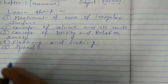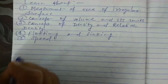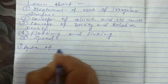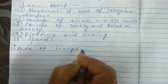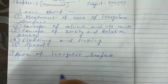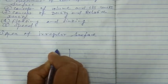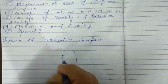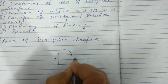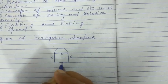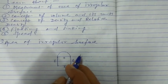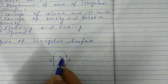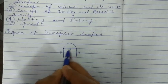Now I am taking some examples. Suppose, for finding the area of an irregular surface — taking an example — suppose this is in the form of a square and this is in the form of a semicircle. If it is 6 cm in length, then it is also 6 cm. For calculating the area of an irregular surface, we must divide it into two different shapes: one in a square form, another in semicircle form.